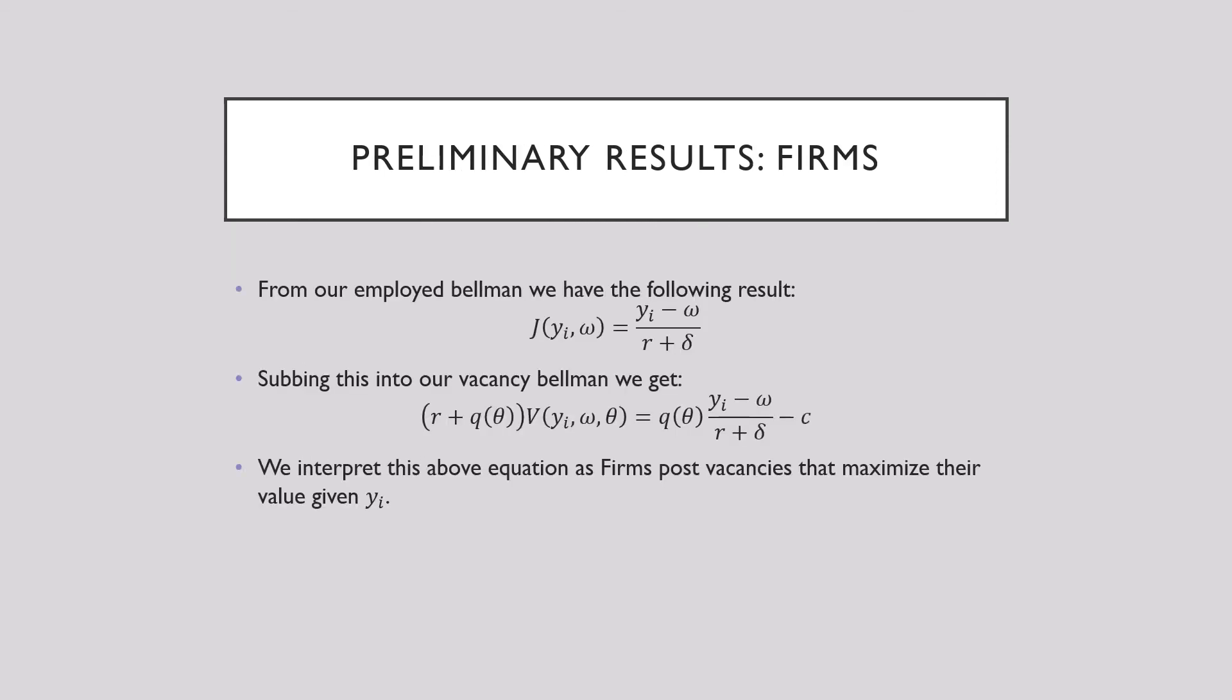From our employee bellman we have the following result, that J, which is our filled vacancy bellman, is equal to (y_i minus omega) all over (r plus delta). Subbing this into our vacancy bellman equation and with some further rearranging, we get the following result. We interpret this above equation as firms post vacancies that maximize their value given y_i. So they basically just seek the submarket that maximizes their value. That's all this means here.